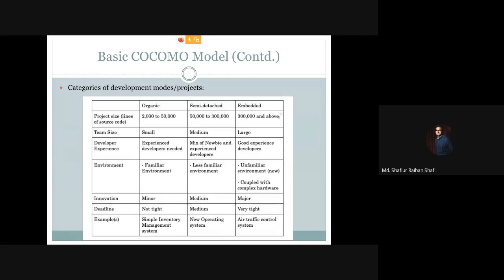Hello, welcome to the software engineering course. In this tutorial, we are going to discuss the categories of projects or development modes according to Boehm, as given in the basic COCOMO model. The three categories of development modes are: the first one is organic, the second one is semi-detached, and the third one is embedded.